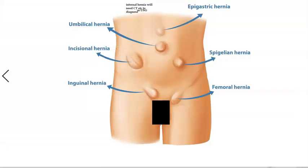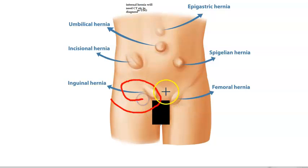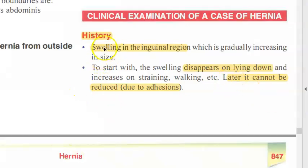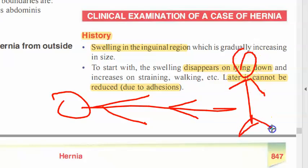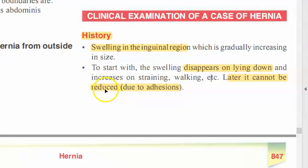A patient comes to you with a swelling in the inguinal region. It could be either direct or indirect hernia, but it is there in the inguinal region. When this person lies down, the swelling disappears, and when they are walking, the size of the swelling increases. Initially it disappears and appears, but later due to adhesions it cannot be reduced.